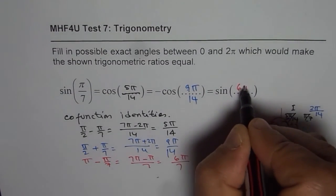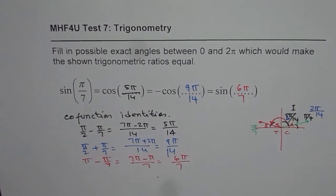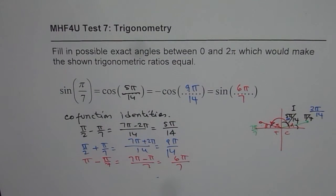So these are the co-function identities which are related to one another. I hope that helps. Thank you and all the best.